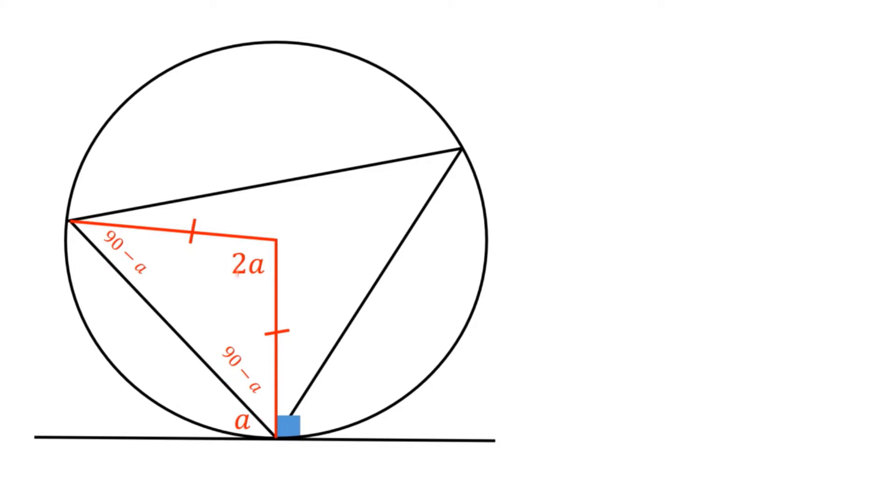And you can see that 90 minus A plus 2A plus 90 minus A gives me the 180 degrees that I'm expecting. Well, finally, we can once again see that we've got an angle at the center and the angle at a circumference in the same arc. So this angle here is going to have to be half of the angle at the center. Half of 2A is A. So here I have again proved that this angle is the same as that angle, which is precisely what the theorem wanted me to show.